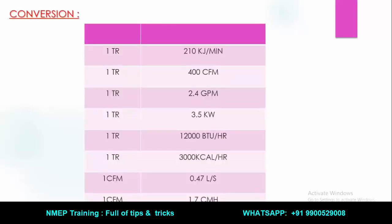It is very important to get all the conversions right. 1 TR is equal to 210 kJ per minute. 1 TR is equal to 400 CFM (cubic feet per minute). 1 TR is equal to 2.4 GPM (gallons per minute). 1 TR is equal to 3.5 kW. 1 TR is equal to 12,000 BTU per hour. 1 TR is equal to 3000 kcal per hour. 1 CFM is equal to 0.47 LPS. 1 CFM is equal to 1.7 CMH.